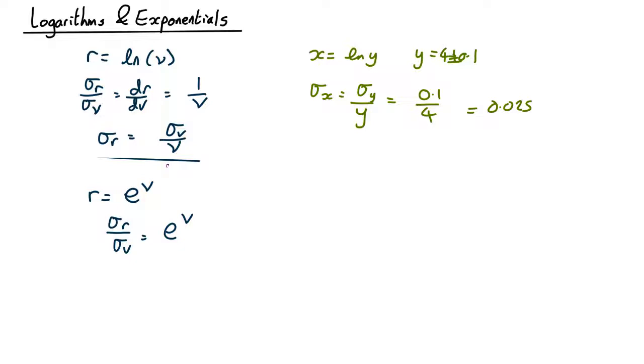Differentiate an exponential you get exactly the same thing. That's the fun thing about exponentials. So what that means is that sigma r equals e to the v sigma v which is just r sigma v.